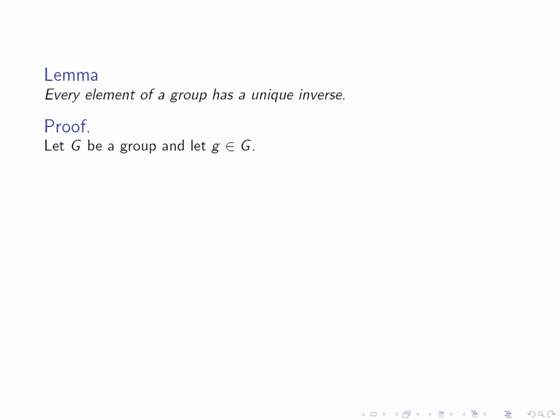Let's pick an element G in G, and let H and K be two inverses of G. So that tells us that GH equals E, and HG equals E, and similarly for K.